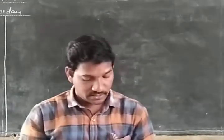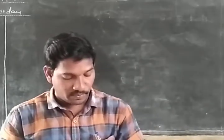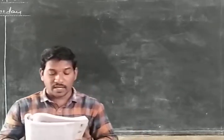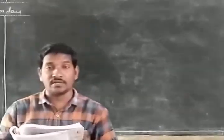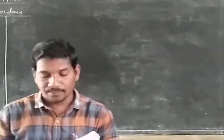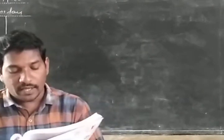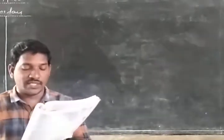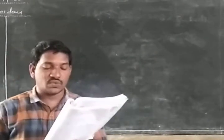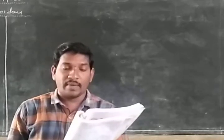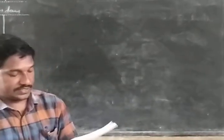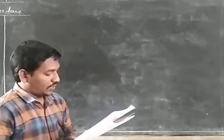Now let's discuss the 15th problem. The parabola y² = 2ax passes through the center of the circle: 4x² + 4y² − 8x + 12y − 7 = 0. It is a direct finding.